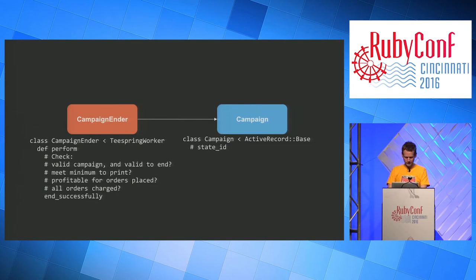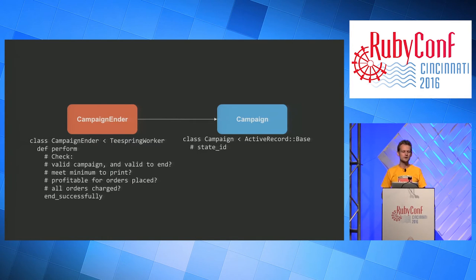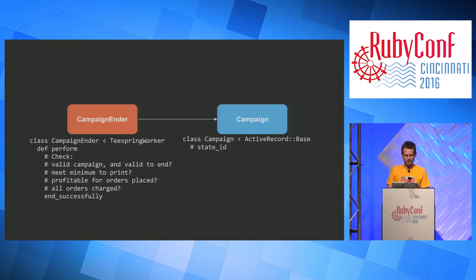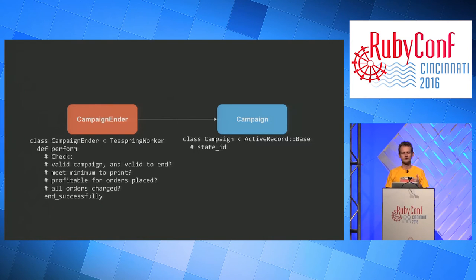A key piece of domain in the fulfillment engine is called the fulfillment job. I'll walk through the lifecycle of the fulfillment job — both how we handle it inside Teespring and with third-party printers. When you create an order on Teespring, you are not going to get it fulfilled right away necessarily. This idea of a campaign really came from models like Kickstarter and Indiegogo — there are a lot of benefits to having a campaign model.